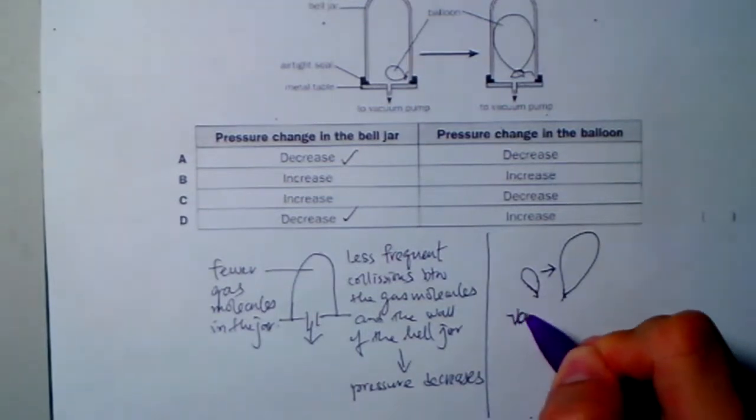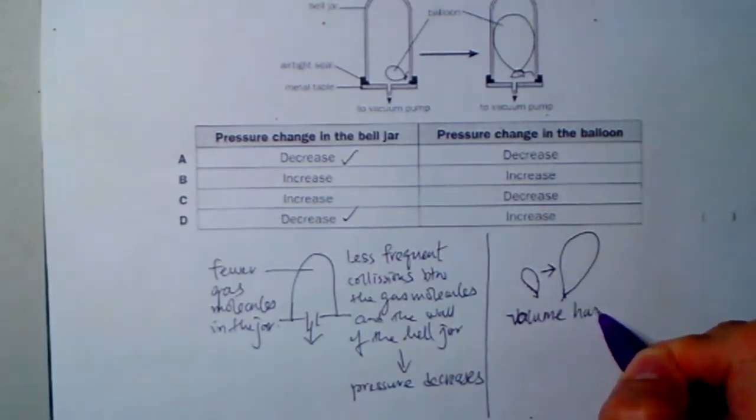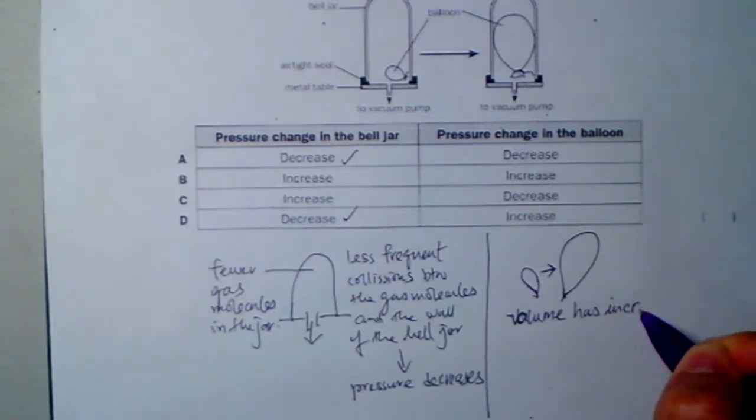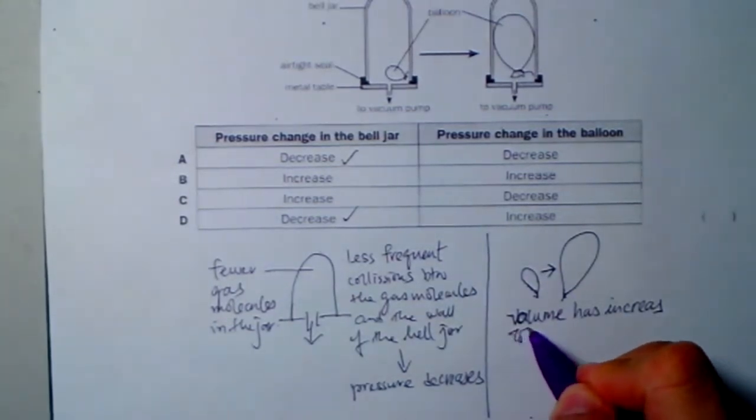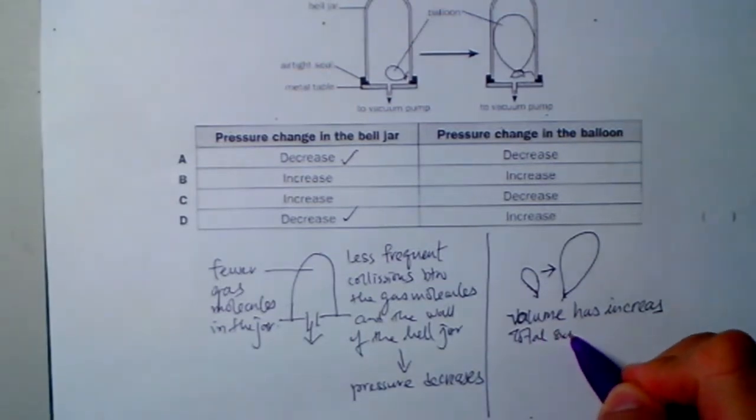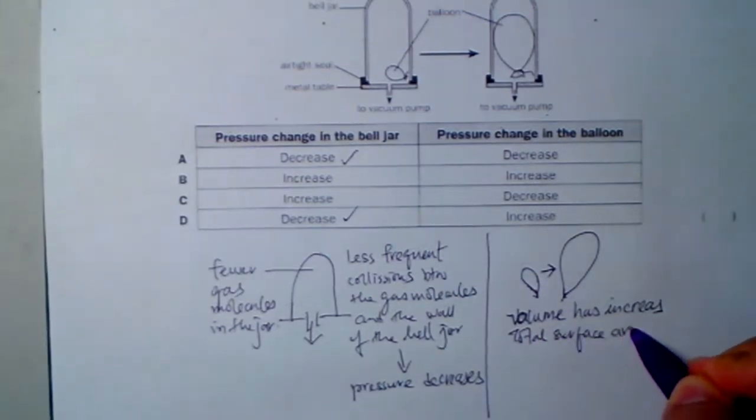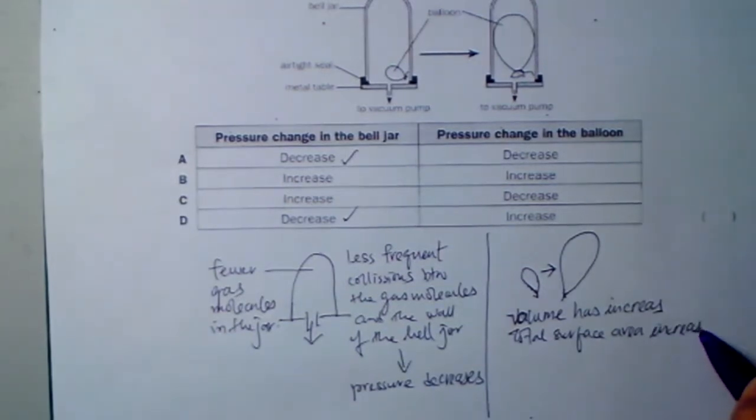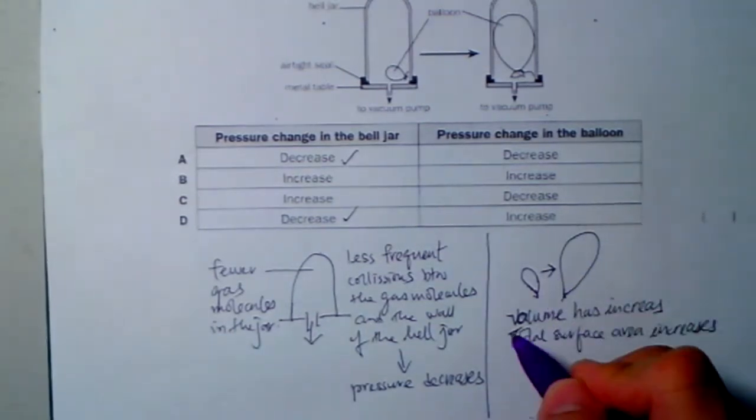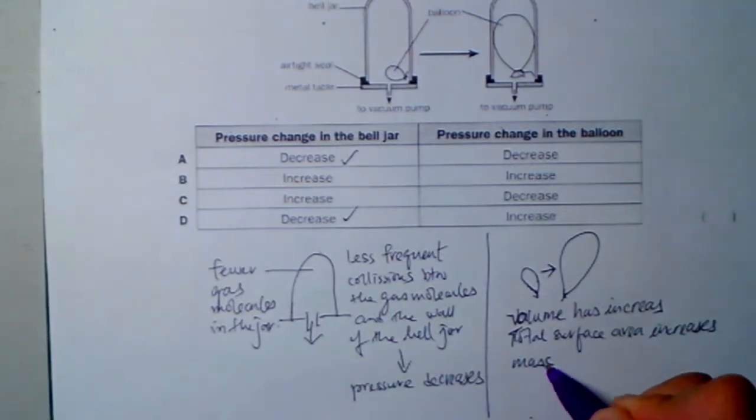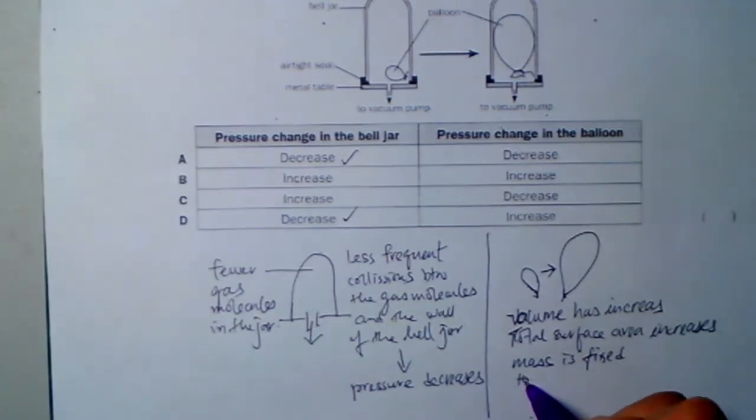So when volume increases, total surface area also increases. As a result, because the mass is still fixed and temperature is fixed, this results in less frequent collision between the gas molecules and the inner wall of the balloon.